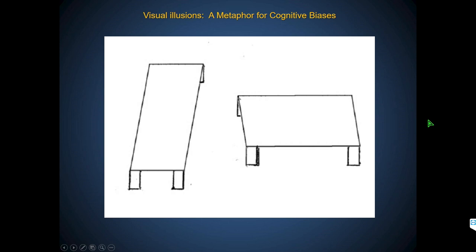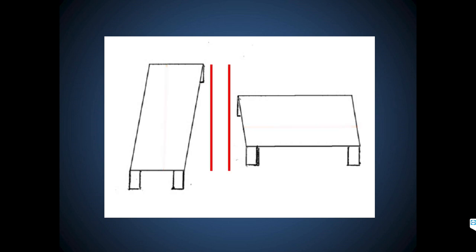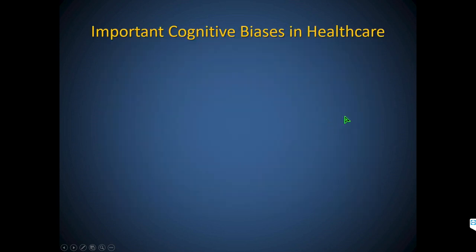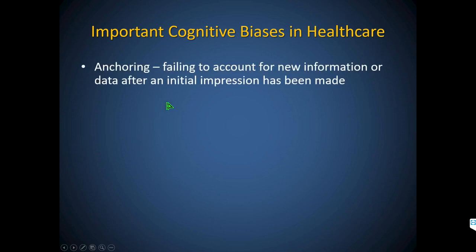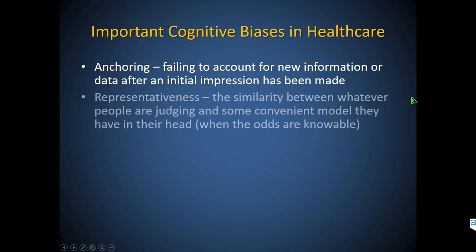That's a metaphor for cognitive biases. Just looking at the Müller-Lyer illusion, you think the lines are different lengths — but when you superimpose them, they're identical. Even after removing the lines, you still say they're different. That's what happens with cognitive biases. The important ones I see in healthcare: anchoring — failing to account for new information after the initial impression; representativeness — misapplying a convenient mental model like transient synovitis in so many situations; and availability — human judgment distorted by the most recent and memorable.